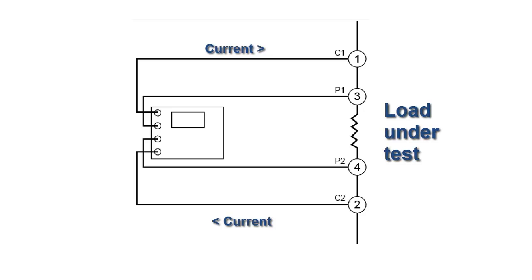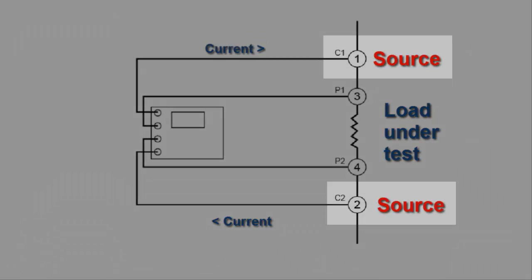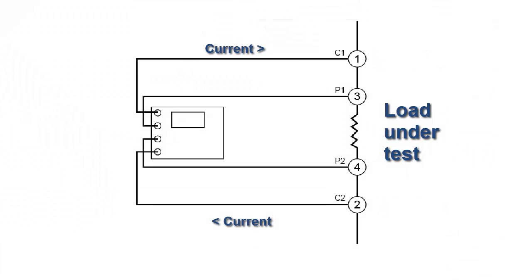In this setup, two separate pairs of probes are used. Pair 1 and 2, sometimes referred to as the source probes, provide a known quantity of constant current, as in the two-wire setup.